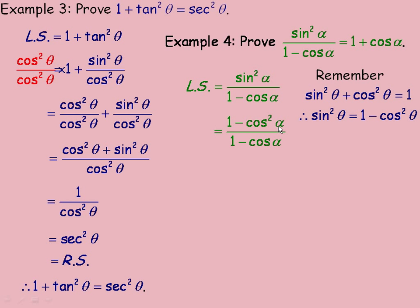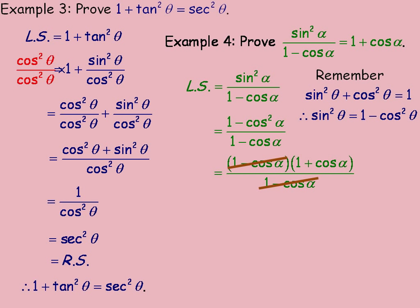Now, 1 - cos²α is the difference of two perfect squares — 1 is 1 squared, and cos²α is cos α all squared. So we factor 1 - cos²α into (1 - cos α)(1 + cos α). The common factor of (1 - cos α) in the numerator and denominator divides out, leaving 1 + cos α, which is what is on the right side. The proof is complete.